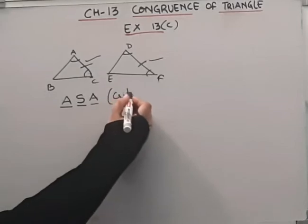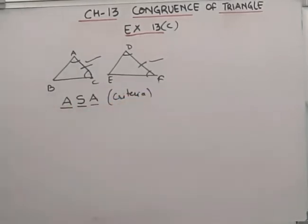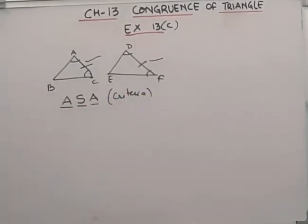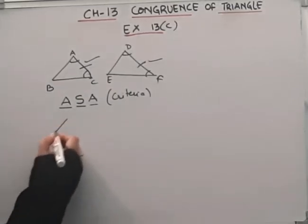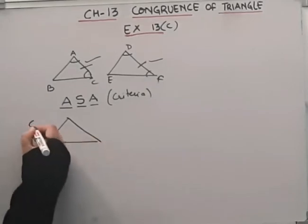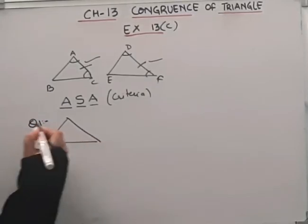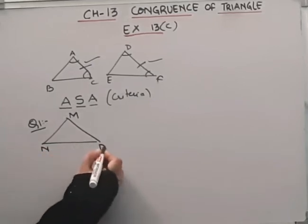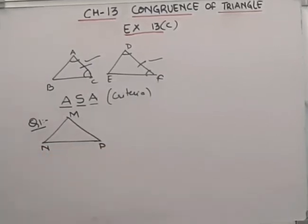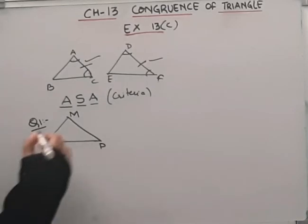So starting with the very first question from exercise 13C. Write the side included between the angles M and N. This is question number 1. There is a triangle, triangle M, N, P.